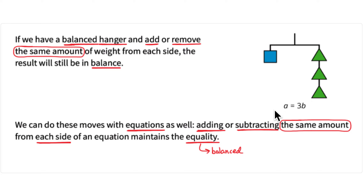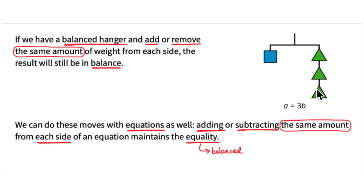This goes a little beyond what the summary covers, but we'll get there soon. So A equals three B, or equivalently B equals one third of A — one triangle equals one third of that blue square. We're going to explore that further in upcoming lessons.